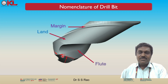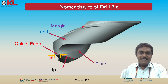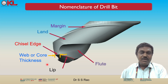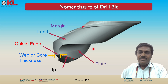The flute is the groove cut on the body. Through the cutting edge, once the material is cut, the chips coming from the workpiece flow along this helical groove and come outside. The lip acts as a cutting edge, and the chisel edge is where the two flanks combine — this is also sometimes called the web or core thickness. These two cutting edges cut the material, and once cut, the chip flows along the helical surface and comes out.